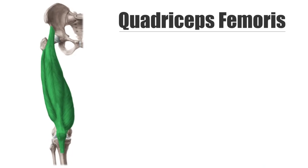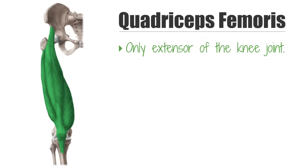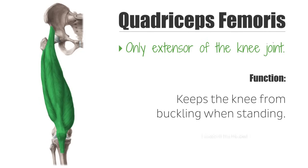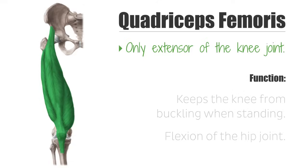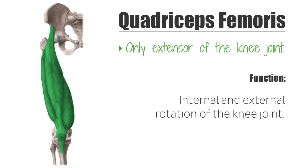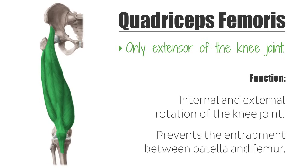The quadriceps is the only extensor of the knee joint. It plays a key role in every movement involving the stretching of the knee, and in addition, it keeps the knee from buckling when standing. Furthermore, the rectus femoris muscle forces a flexion of the hip joint. To a small extent, the vastus medialis muscle is involved in the internal rotation and the vastus lateralis muscle in the external rotation of the knee joint. The articularis genus muscle is directly linked to the knee joint capsule and the suprapatellar bursa. During knee extension, it pulls both structures proximally and by this means prevents their entrapment between the patella and femur.